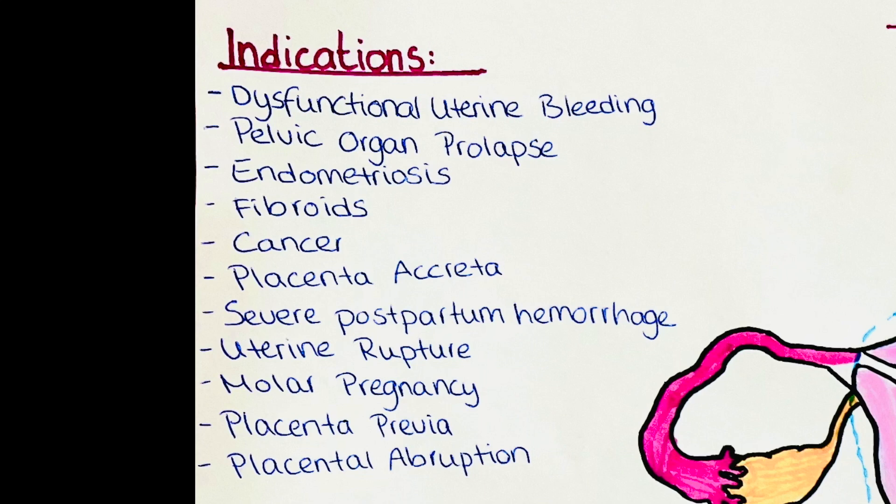Other indications for a hysterectomy include placenta accreta, severe uterine bleeding after delivery most commonly due to uterine atony, uterine rupture, molar pregnancy and choriocarcinoma, placenta previa, and placental abruption.